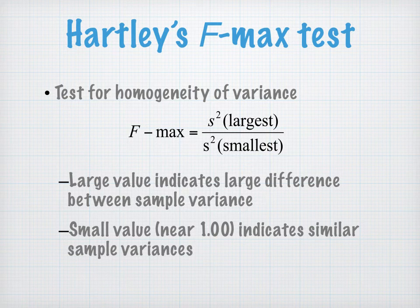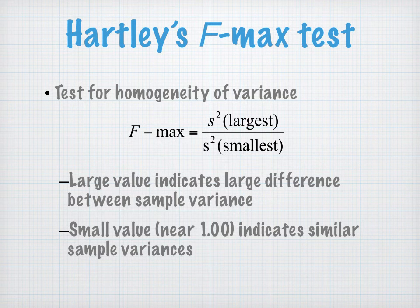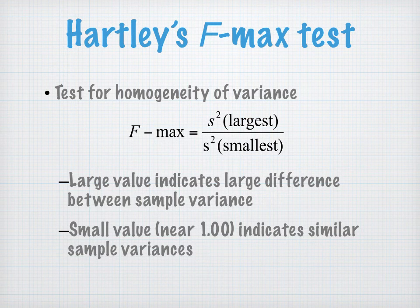Notice this is Fmax — this is different from when we talk about an F-test later. On your formula sheet, you can write 'homogeneity of variance' over Fmax, but understand this is different from the F that's ANOVA on the back of that formula sheet. Do not get them confused because they're doing very different things. They both involve variance, which is where the F comes in, but they are doing very different things. This is not the same thing as ANOVA.